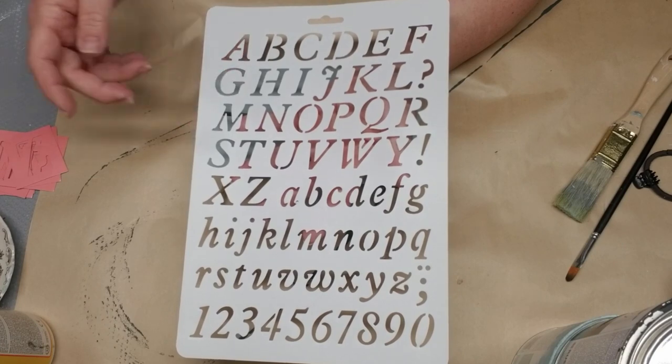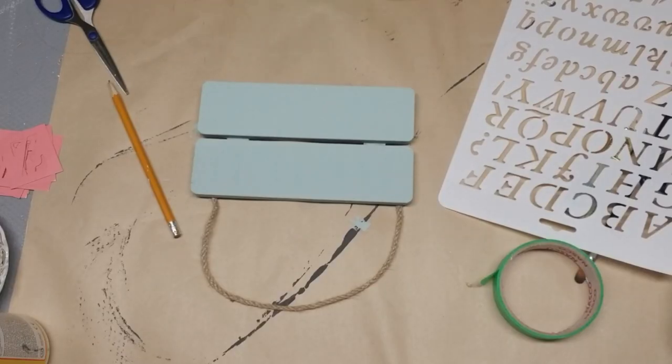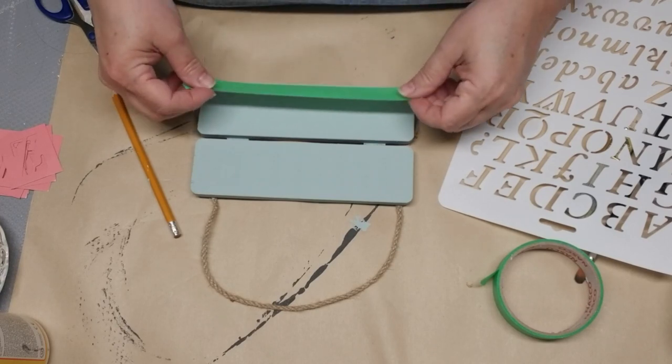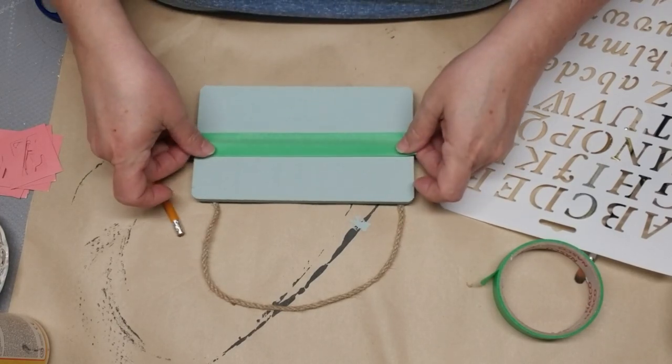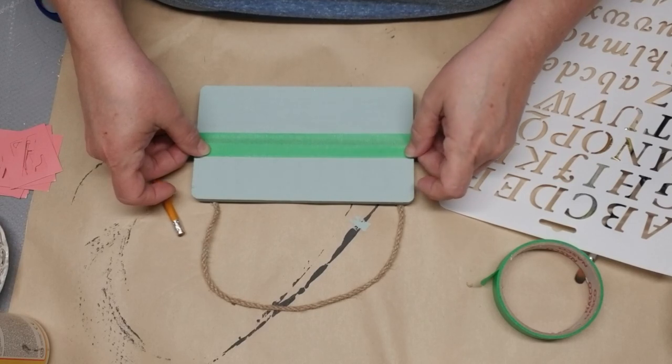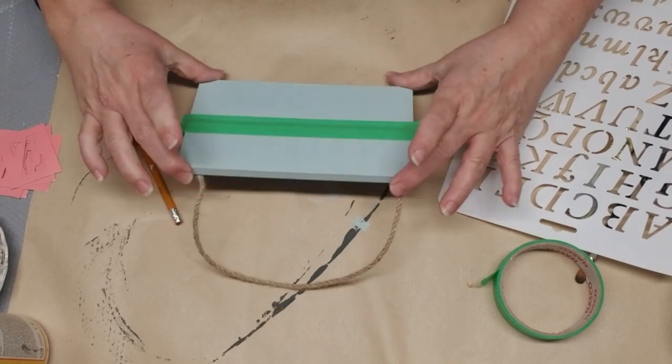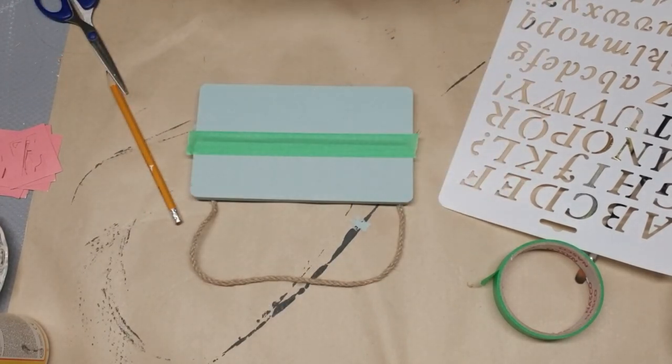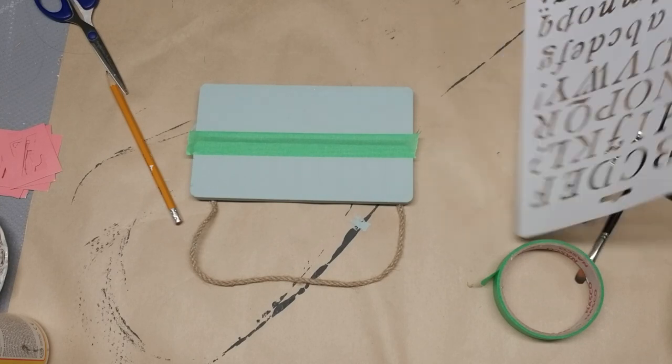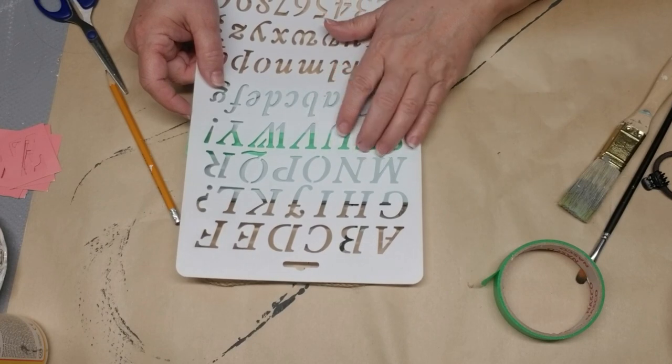I'm going to use some stencils to put the name of our lake on this sign. These stencils are from Dollarama and were $1.25. I'm not going to use my stippling brush or stencil brush because the letters will be too close together. I'll use painter's tape to give myself a straight line and then use my pencil to outline the letters.